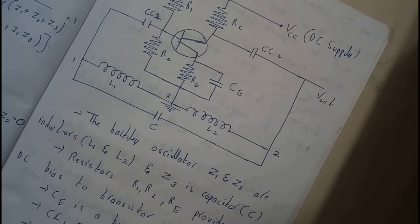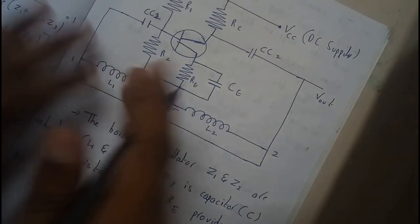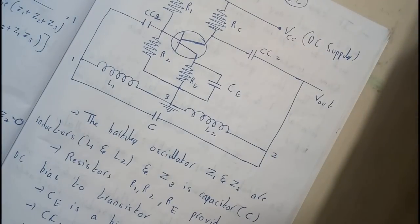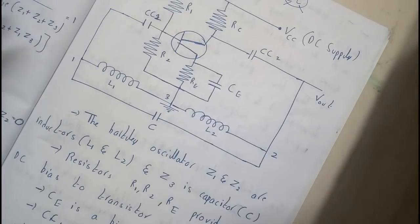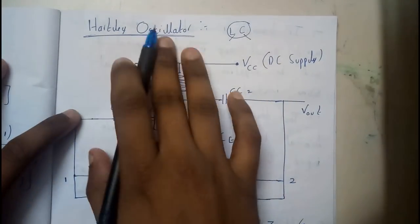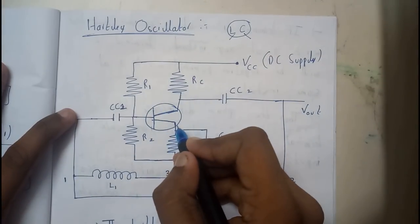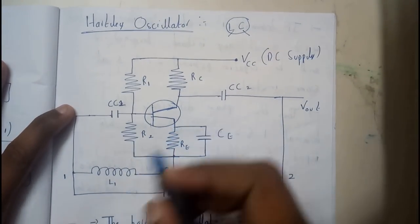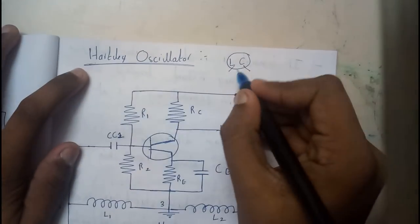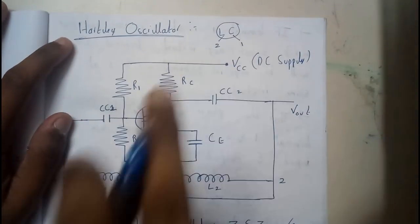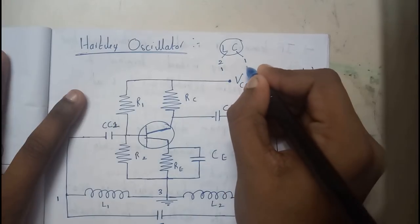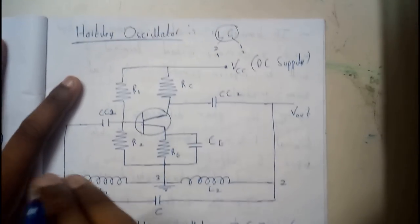Once you hear the word Hartley oscillator, you should remember the generalized equation of the LC circuit. A Hartley oscillator consists of inductors and capacitors. The diagram has 1 amplifier with 4 resistors, 2 capacitors, 2 inductors, and 1 capacitor. In Hartley we have 2 inductors and 1 capacitor — that's the main point. The Colpitts oscillator diagram is exactly the same but with 1 inductor and 2 capacitors — that's the only change from Hartley to Colpitts.